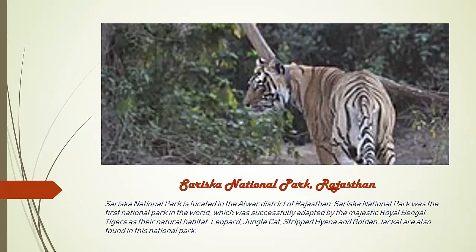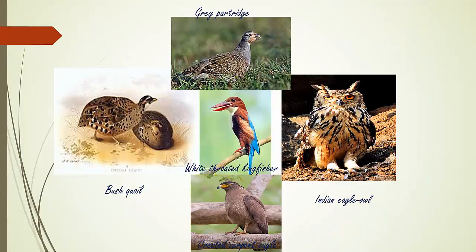Sariska National Park is found in Alwar district of Rajasthan. The park has successfully adopted majestic Royal Bengal Tigers. Examples of wildlife in Sariska National Park include Grey Partridge, Bush Quail, White-throated Kingfisher, and Indian animals.